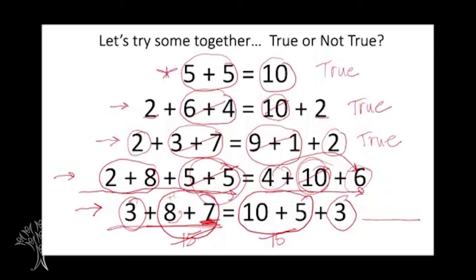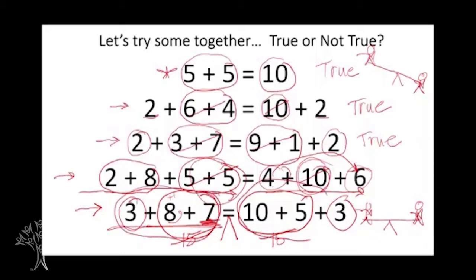I think of these equations like a teeter-totter. If you've ever been on a teeter-totter, you know you have to have the same size or weight person on it with you, or it doesn't work — one person ends up on the ground and the other is high in the air. I like to think of our equations the same way: we need balance in the middle so each side has the same value. The sides can look different — one is 2 plus 3 plus 7 and the other is 9 plus 1 plus 2 — but they both have the value of 12.